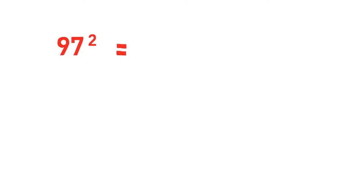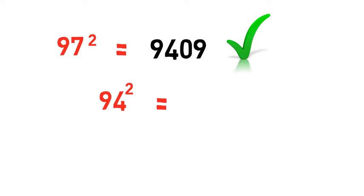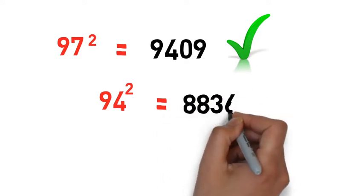97 square equals 9409. Oh right! 94 square equals 8836. Excellent!